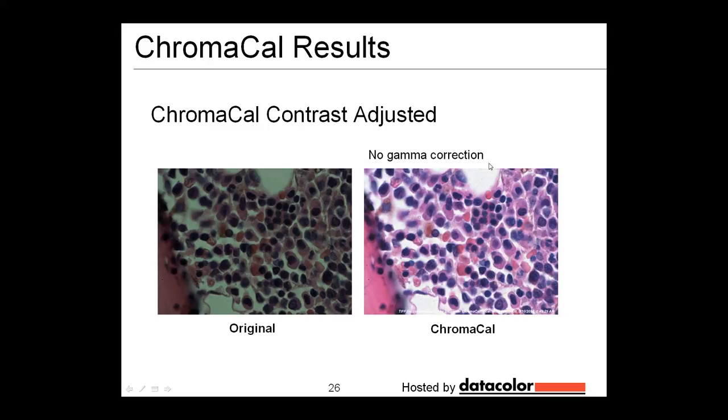And then, finally, if you do a contrast adjustment, there's no gamma correction. That adjustment is linear. You're not going to change the relationship of tones.